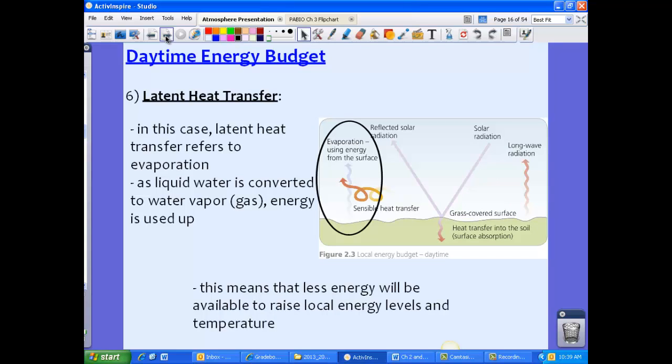And finally, we have latent heat transfer. So in the daytime, we're actually referring to evaporation. So as liquid water is converted to a gas or to water vapor, energy is used up. So this means that that energy is not available for any sort of temperature increase or local energy levels, because it's being used up just to convert from liquid water to water vapor. So there's no energy in this case. However, it still is a part of what's going on, because it's using some of that energy that gets radiated into the area from the Sun.